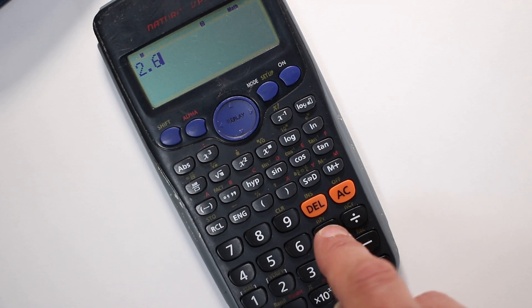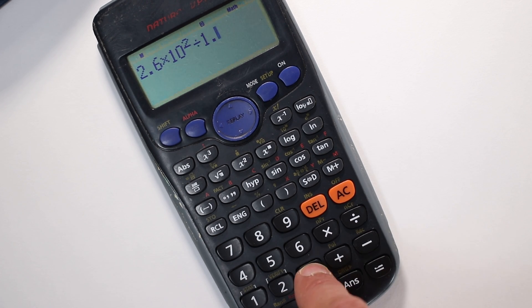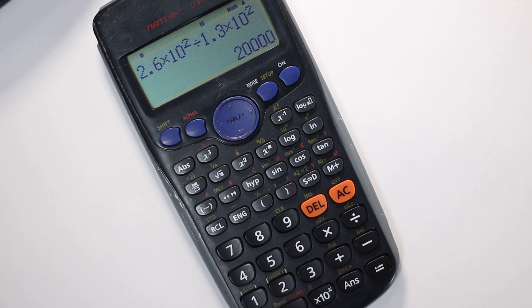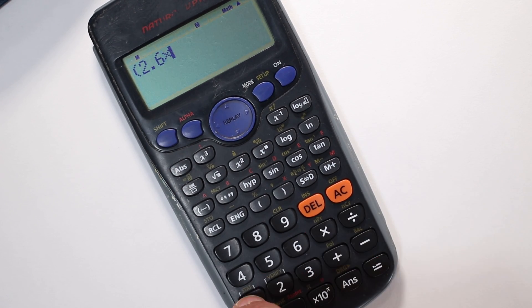Now one way that people will sometimes type this into their calculators, and this is the wrong way, is they will type it all in like 2.6 times 10 squared divided by 1.3 times 10 squared, and that gives you an answer of 20,000 because of the order in which your calculator is doing things. So there are two ways to avoid this mistake.